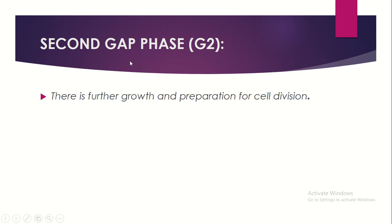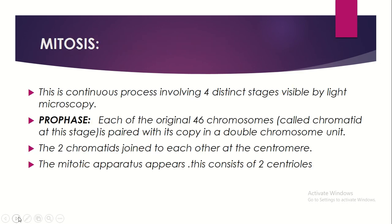Next is G2, the second gap phase. G1 is the first gap phase and G2 is the second gap phase, during which there is further growth and preparation for cell division. Following interphase comes mitosis, a continuous process involving four distinct stages visible by light microscopy.